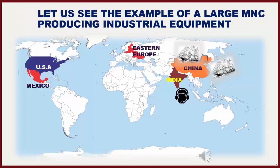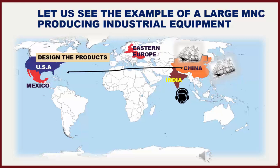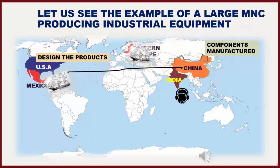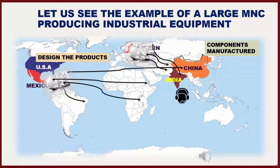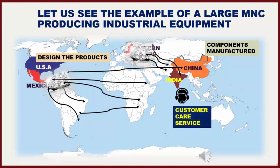Let us see the example of a large MNC producing industrial equipment. A large MNC producing industrial equipment designs its products in research centers in the United States. These are then shipped to Mexico and Eastern Europe where the products are assembled, and the finished products are sold all over the world. The company's customer care is carried out through call centers located in India.